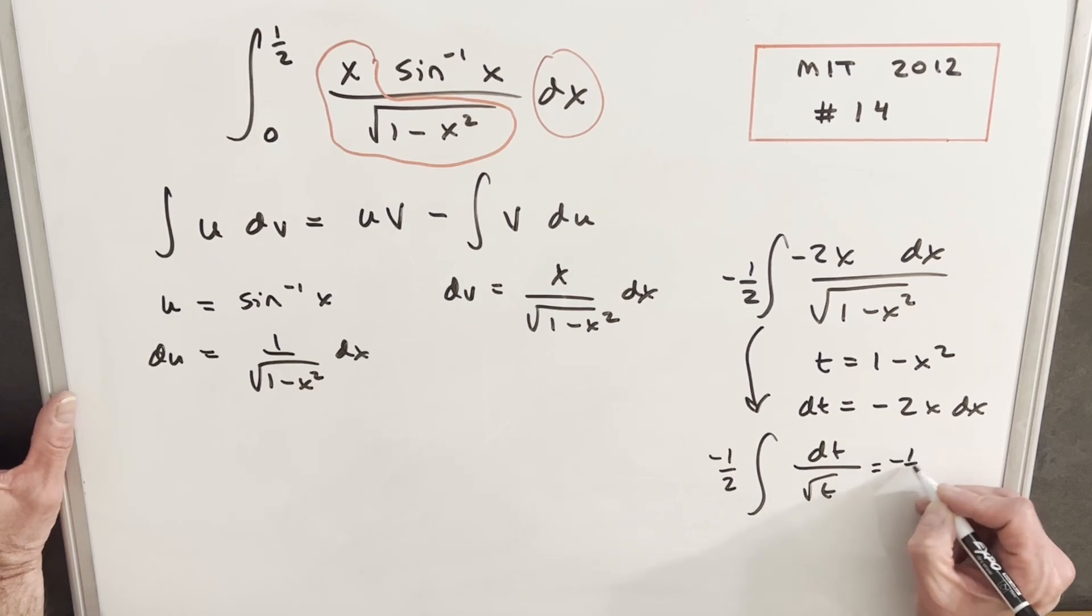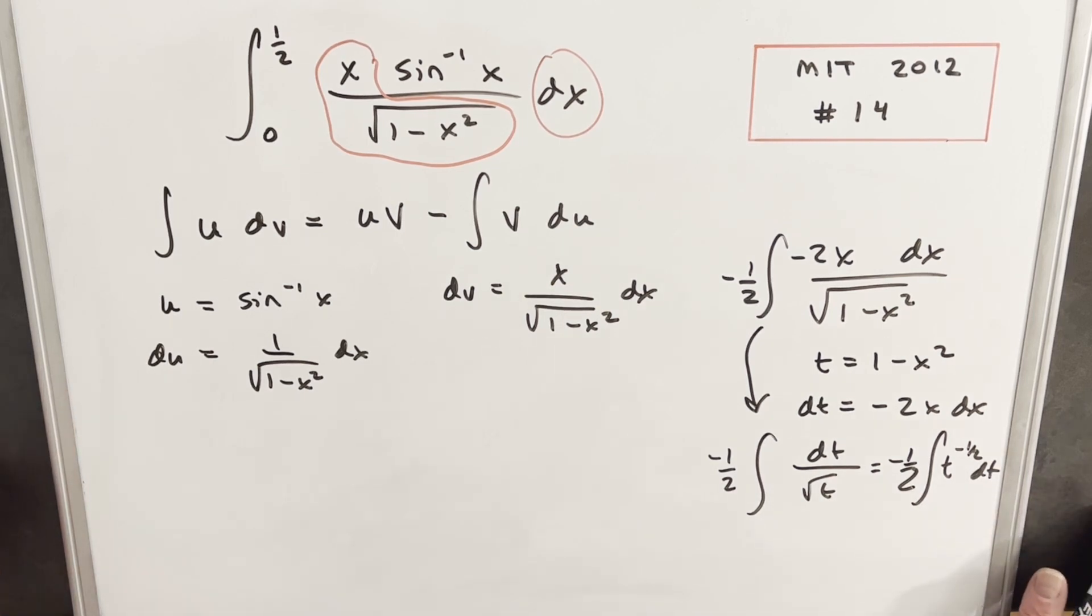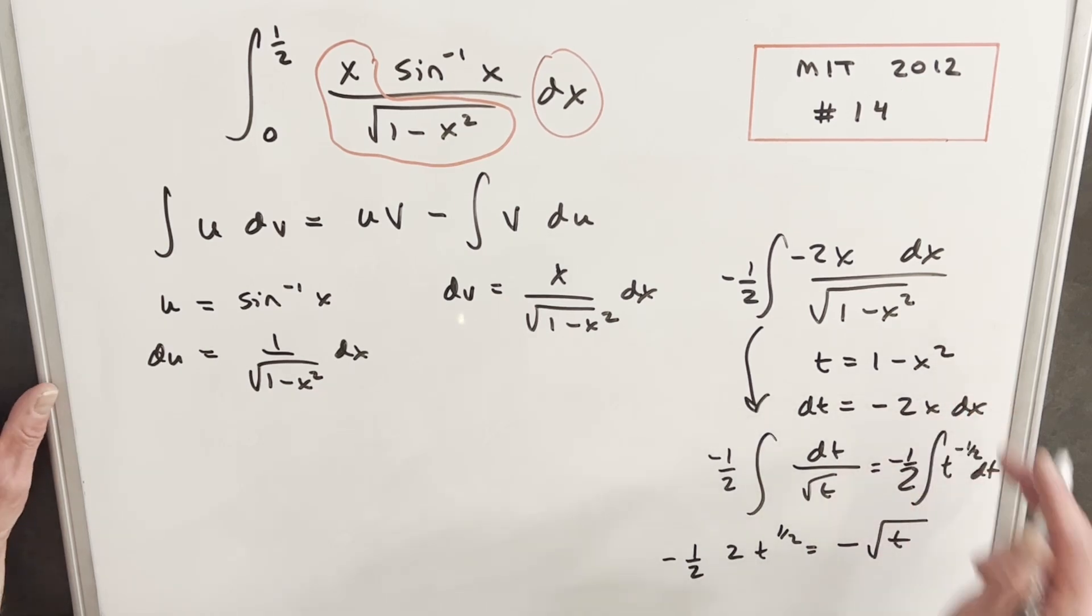Just so I can use the power rule, I'm going to write it as t to the minus 1/2. For this integral, when we integrate using the power rule, we're going to have t to the 1/2, but there'll be a 2 out front. So we're going to have minus the square root of t, but t is just this, so we're going to have minus the square root of 1 minus x squared.